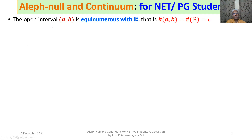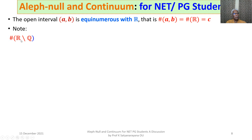The open interval (a, b) is equinumerous with R, meaning it is equivalent to the set of real numbers. Therefore the cardinality of (a, b) equals the cardinality of R, which equals C. The cardinality of R minus Q — which is the set of irrational numbers — equals the cardinality of T (transcendental numbers), equals the cardinality of R^N, equals the cardinality of R, equals C.